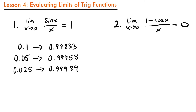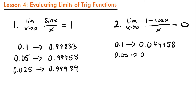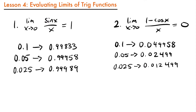We can do the same thing for our second limit, 1 minus cosine x over x. As we plug in smaller values, we find ourselves getting closer to 0. Plugging in 0.1 gives 0.049958; for 0.05, we get 0.02499; and for 0.025, we get 0.012499. So we can see we're getting closer and closer to 0 — the number gets smaller with each iteration, confirming this limit equals 0.